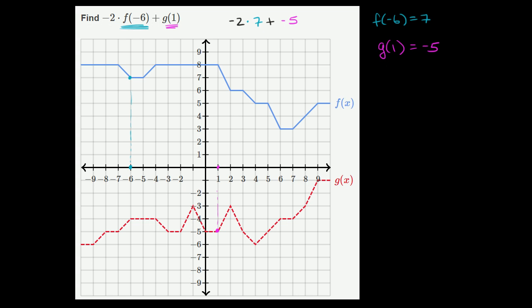This simplifies to, let's see, negative 2 times 7 is negative 14 plus negative 5, which is negative 19. And we are done.